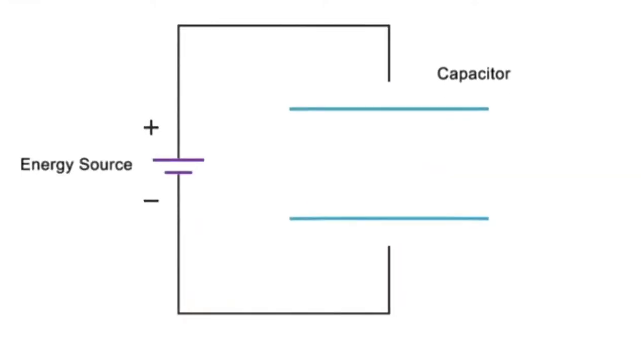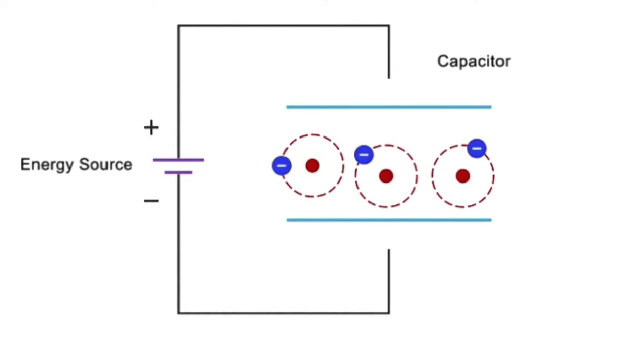Capacitors work to store energy by stretching the orbits of electrons in a dielectric compound between a positively charged plate and a negatively charged plate.